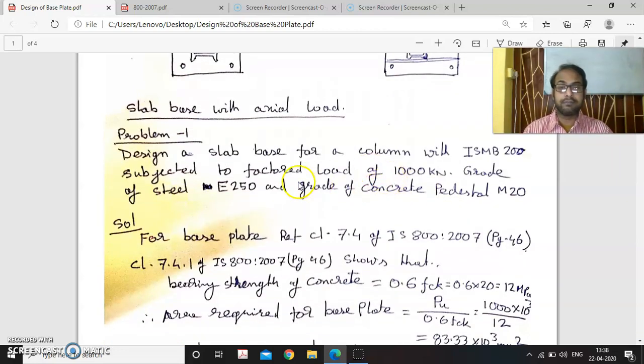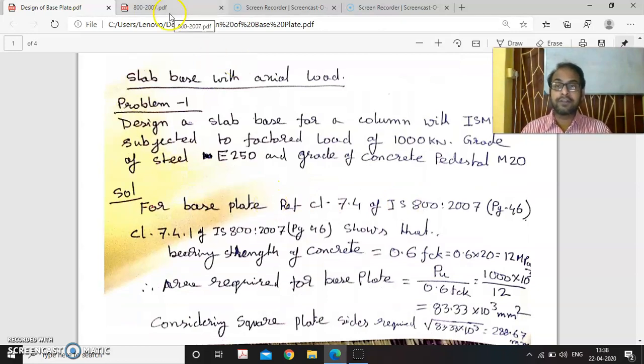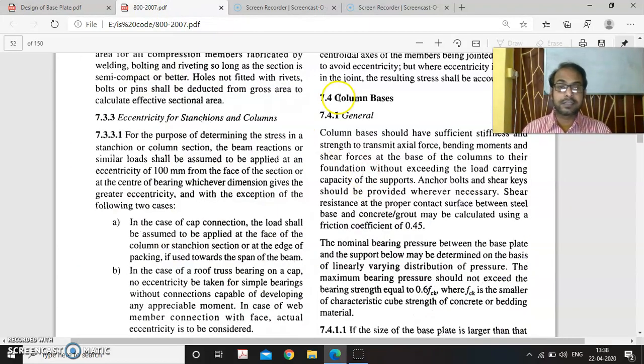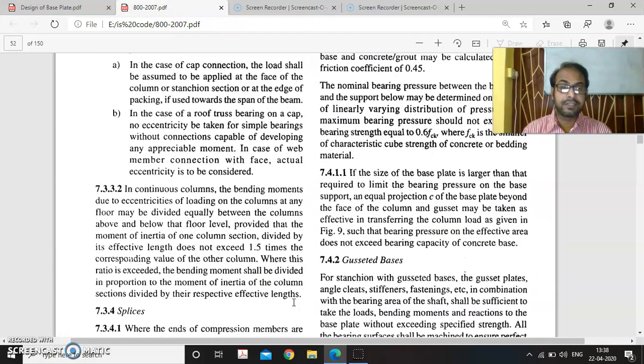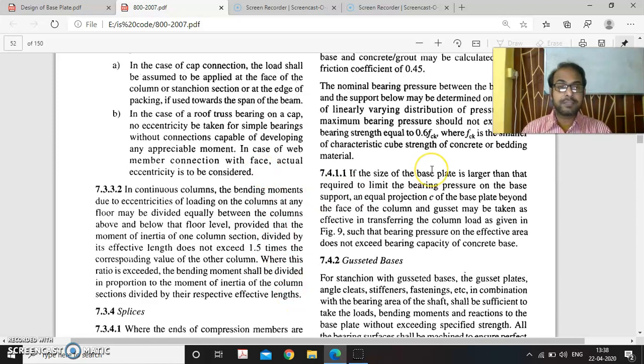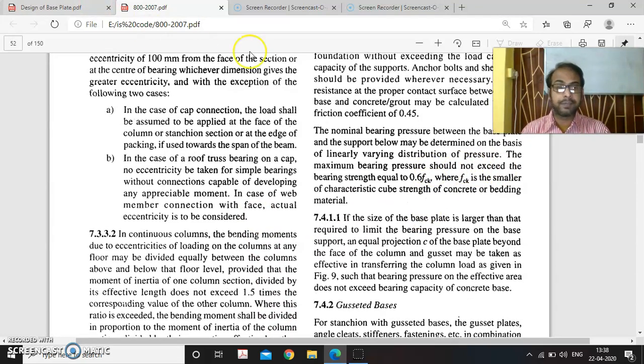First problem is of axially loaded column base plate which is made of ISMB 200 and is subjected to 1000 kilonewton of factored load. The grade of steel is E250 and the pedestal concrete is made with grade M20. Here we will see that clause 7.4 of IS800 page 46 is referred, which gives the provision of the code. The maximum bearing pressure should not exceed the bearing strength equal to 0.6 FCK, where FCK is the smaller characteristic cube strength of the concrete or bedding material.